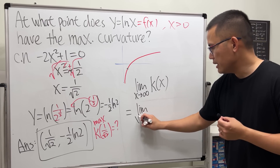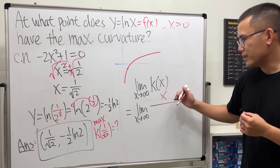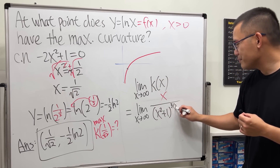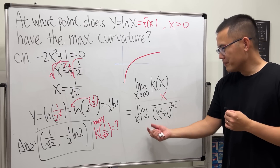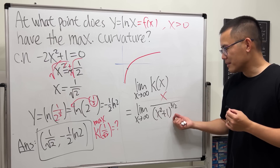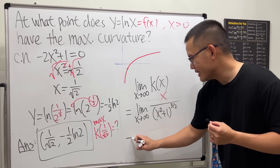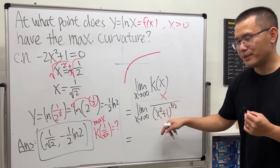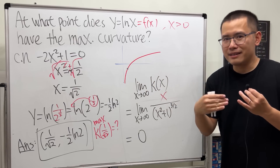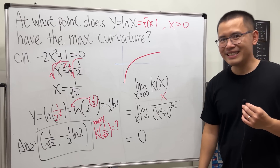The limit as x approaches infinity of the curvature — using our expression x / (x² + 1)^(3/2) — the power on the top is 1 and the effective power on the bottom is x³ (ignoring the +1). The bottom power is bigger, so the limit is 0. This means as you keep going, you don't really feel the curvature anymore.